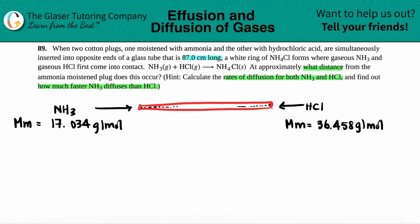Remember, the less mass travels fast. NH3 has a lower mass, so this one is going to travel quicker. HCl, since it's weighed down more with a higher mass, is going to travel slower.